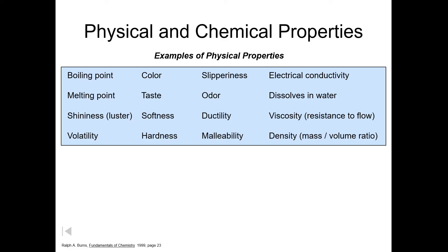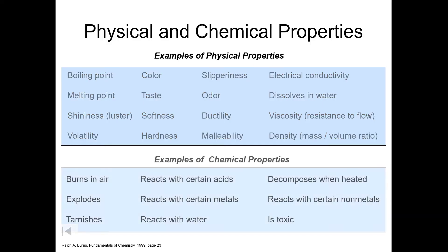So some examples of physical properties, once again, would include things like boiling point, melting point, luster, volatility which is how quickly something evaporates, color, taste, softness or hardness, slipperiness, odor, ductility, malleability, electrical conductivity, if something dissolves in water or solubility, viscosity meaning how resistant something is to flow, and density. Chemical properties would include things like something that burns in air, exploding, tarnishing, reacting with acids, or reacting with metals, or even reacting with water. Some compounds decompose when you heat them, and some react with certain non-metals. Toxicity would also be considered a chemical property.